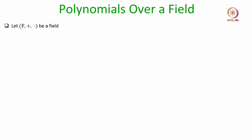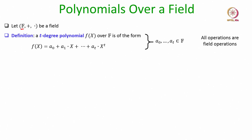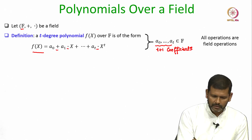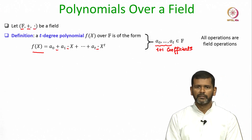What are polynomials over a field? Imagine you are given a field F with abstract plus and dot operations. A t-degree polynomial over this field will have t plus 1 coefficients, and all the plus and dot operations are the field operations.